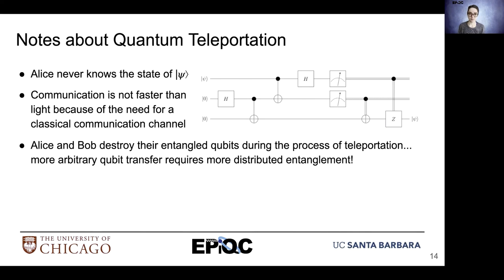During the process of teleportation, Alice and Bob destroy their entangled qubits. So if we want to transmit more qubits, we need to generate more entanglement and distribute it.